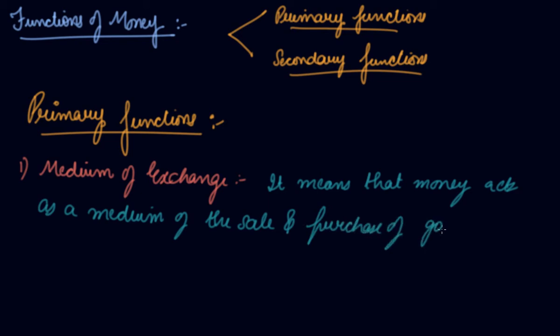In the absence of money, what used to happen was that goods were exchanged for goods, and it created a problem of double coincidence of wants. So money was invented, and the main primary function of money is the medium of exchange. Now the second function of money is measure of value.